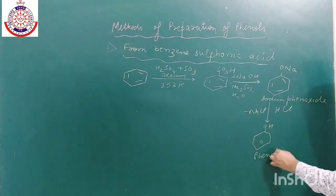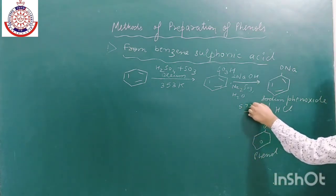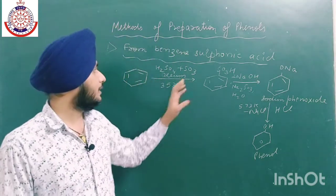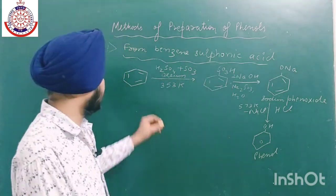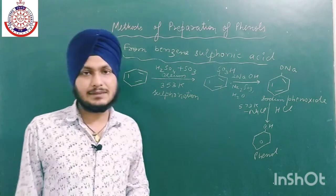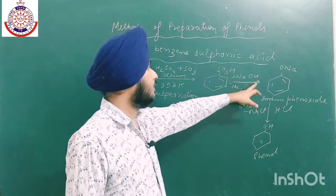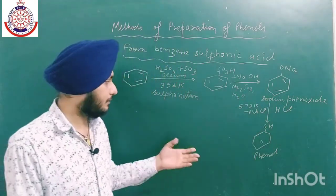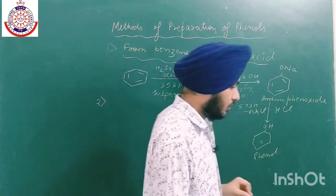Sodium phenoxide is then reacted with HCl at high temperature, around 573 Kelvin. NaCl leaves and we get phenol as the product. This first method involves: sulfonation of benzene with oleum, treatment with alkali to form sodium phenoxide, then reaction with HCl at high temperature to yield phenol.